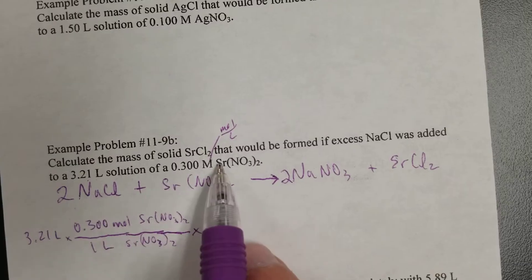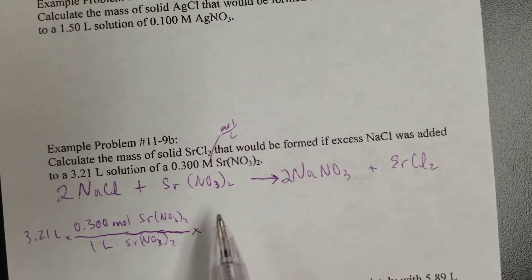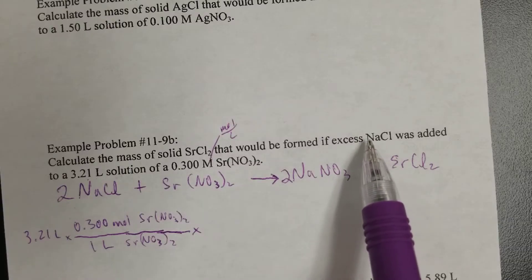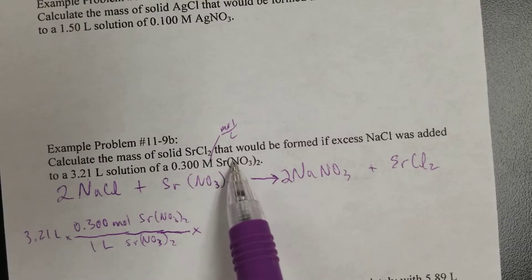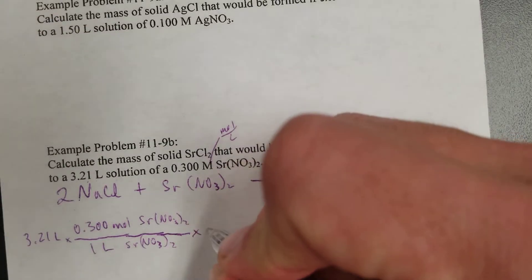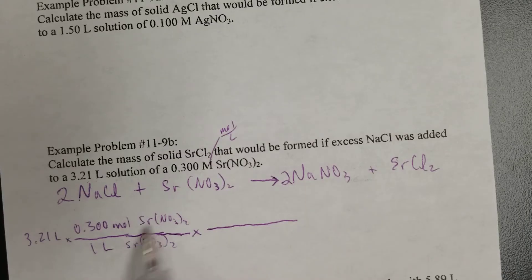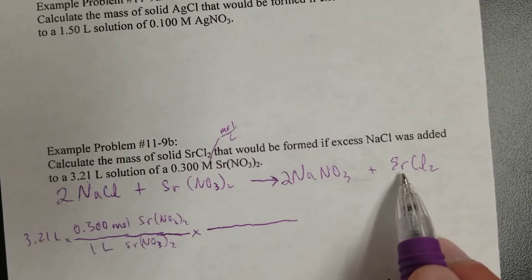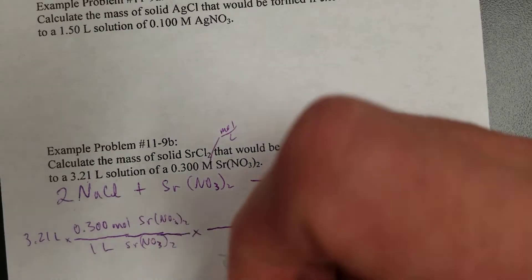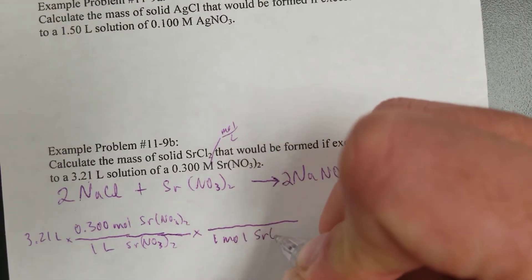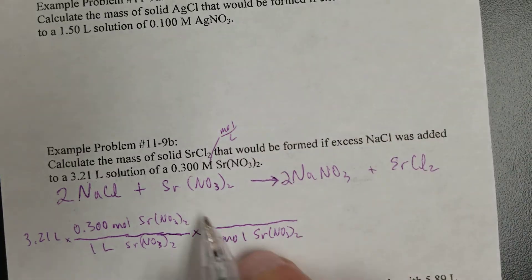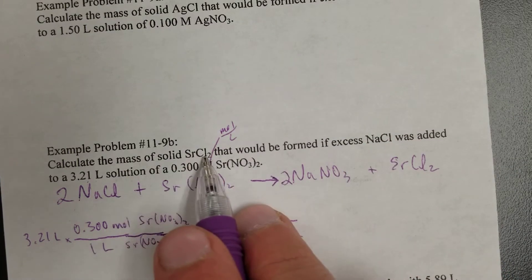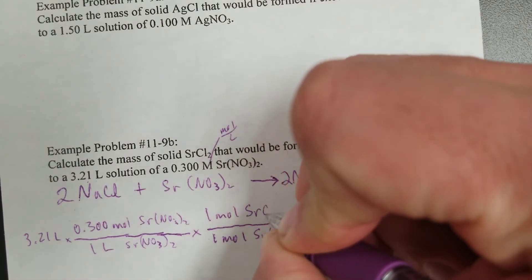The reason you use these two is because all stoichiometry problems require you to get to moles — convert to moles of what you're given, then from moles of what you're given to whatever unit is wanted for the thing being asked about. So I took the molarity, broke it down to moles per liter, and now that I'm in units of moles — because liters cancel liters to give moles — I can use the balanced equation: for every one mole of strontium nitrate, there is one mole of SrCl₂.